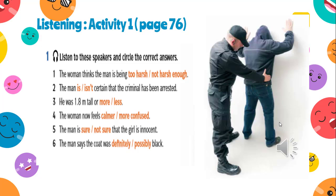One: 'He deserves the death penalty.' 'That's a bit harsh, isn't it?' Two: 'I'm sure he's been arrested.' Three: 'He must have been at least 1.8 meters tall.' Four: 'Thanks for reassuring me.' Five: 'I have my doubts about her innocence.' Six: 'I think his coat was black, but I couldn't swear to it.'